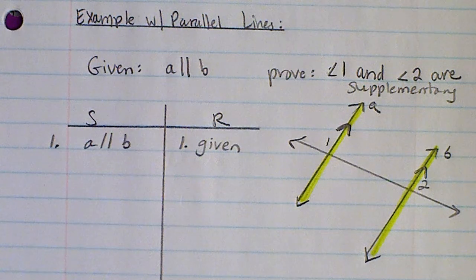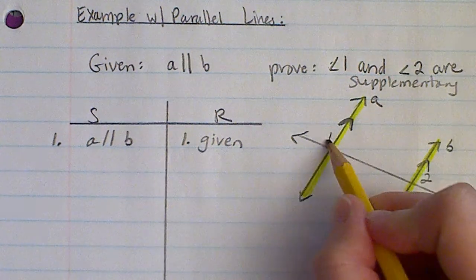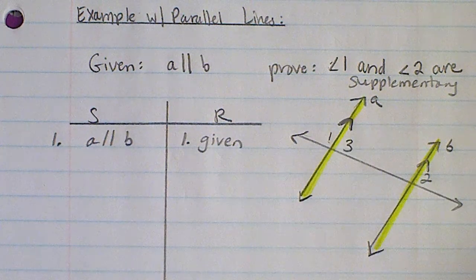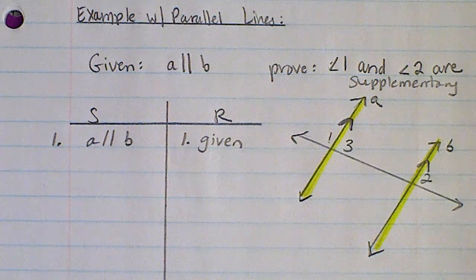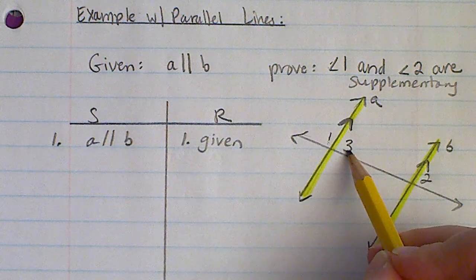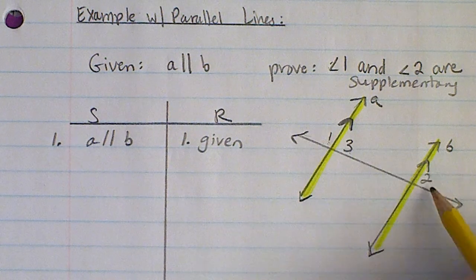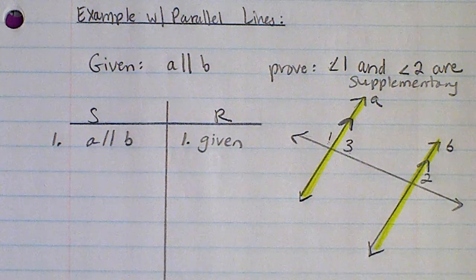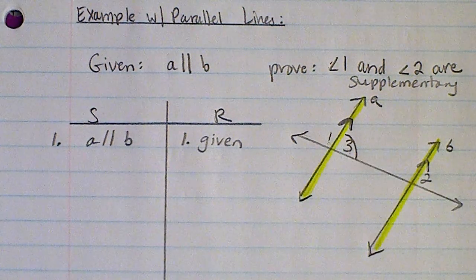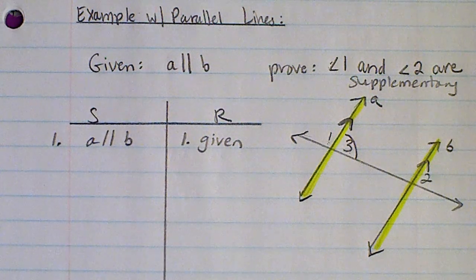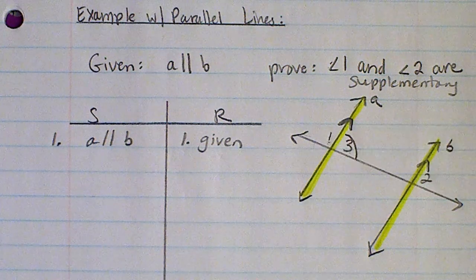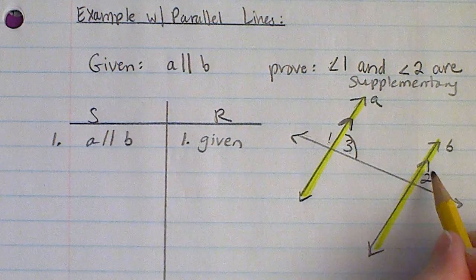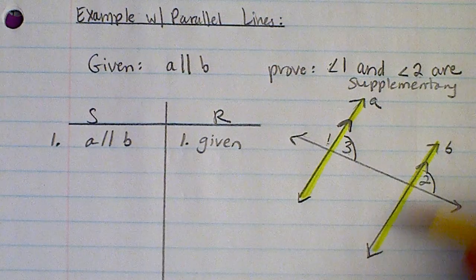I need to find some other angles that are supplementary to angle 1 or angle 2 to help build the story. Most of us are getting good at identifying linear pairs, which are supplementary. Looking at angle 1, I'll name this new angle 'angle 3.' Angle 1 and angle 3 form a linear pair, which means they must be supplementary. Now — if angle 1 and angle 3 are supplementary, how do I connect that to angle 1 and angle 2 being supplementary? I need to think about what else I know about angle 3.